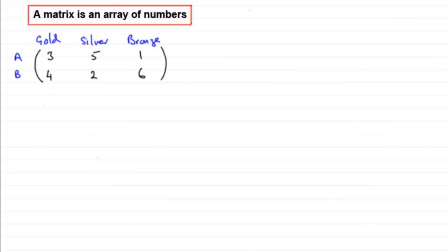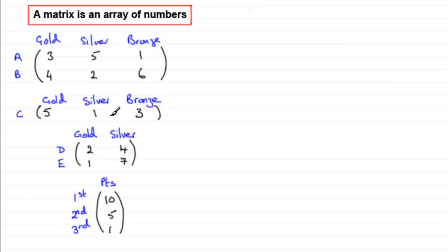Now you can have matrices of varying sizes and shapes. You can see here what we've got is a matrix with just one row. And it's got what we call three columns. And here we have a matrix,